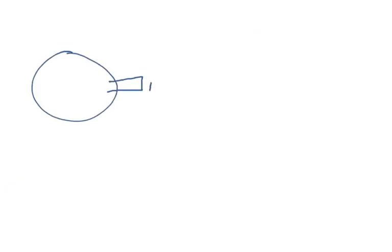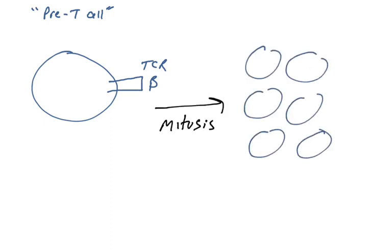So we've got the cell that has undergone gene rearrangement in the beta gene. We're going to call this a pre-T cell. Now, what's interesting is that this cell undergoes mitosis, so now you have many cells that have this T cell receptor beta protein rearranged. And now each of these cells undergoes rearrangement in the TCR alpha gene.